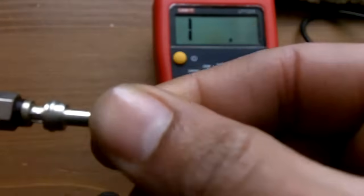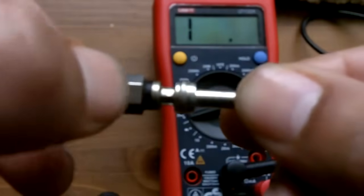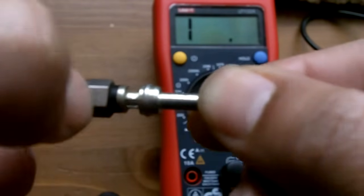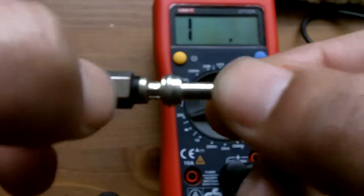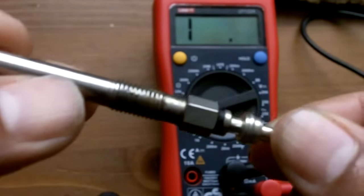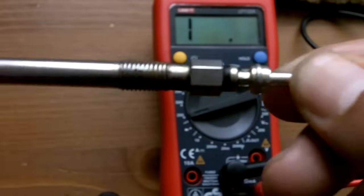All I'm going to be doing is putting the negative lead of the multimeter on the nut. The nut is the furthest place up. Really, when it's out of the car, you may as well put it on the body of the glow plug.